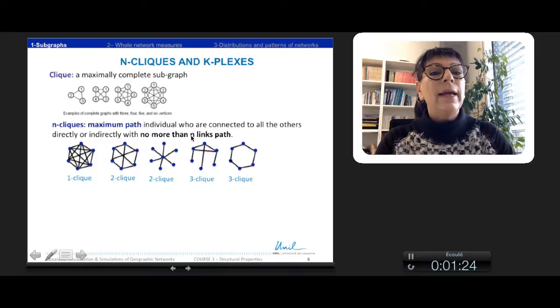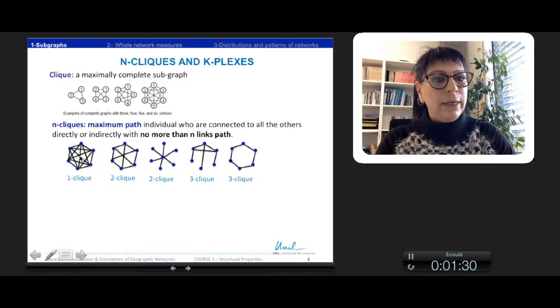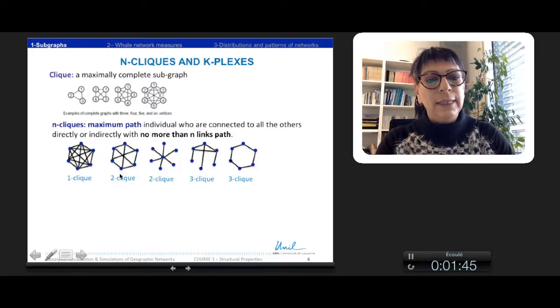We define a maximal path that individuals are connected to all the other ones directly or indirectly, with no more than N-link paths. For example, a one-click is a clique, so directly linked to all the other nodes. A two-click, you can have two paths to reach from one node to the other one. Here for this direction, or this direction for this link.